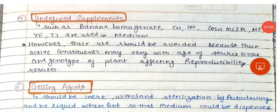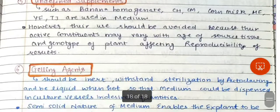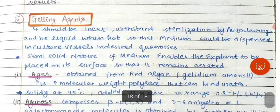Undefined media such as banana homogenate, corn milk, etc. can be used in the medium. However, their use should be avoided because their active constituents may vary with the age of the source tissue and genotype of the plant, affecting the reproducibility of results.